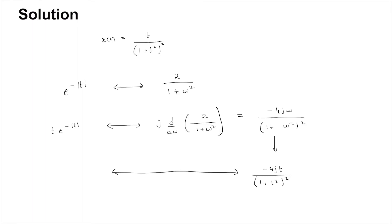Applying duality, this goes into the time domain as -4jt/(1+t²)² as the Fourier transform. Now replace the right-hand side expression by 2π·X(-jω), so that is -ω·e^(-|-ω|), which is just -ω·e^(-|ω|).